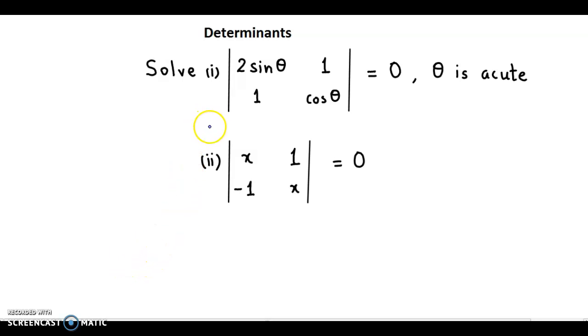In this video we are going to discuss a few examples from determinants. The question is: solve the determinant |2sinθ 1; 1 cosθ| = 0, where θ is acute.